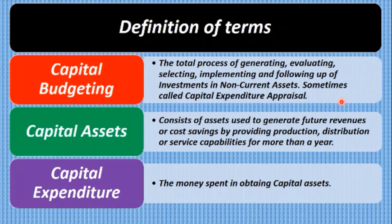The assets must do these things: they must generate future revenues, or in terms of cost benefits, save costs that you would have otherwise incurred, and they must provide production, distribution, or some service capability. In other words, they should be bringing in an income. Capital expenditure is the money spent in obtaining capital assets.